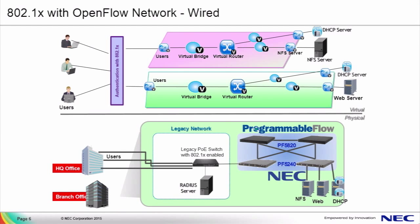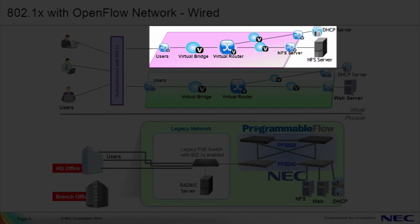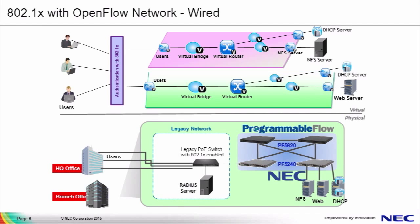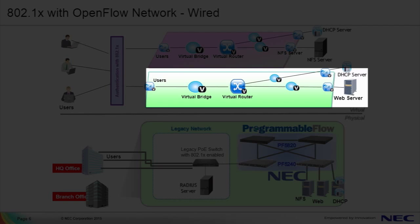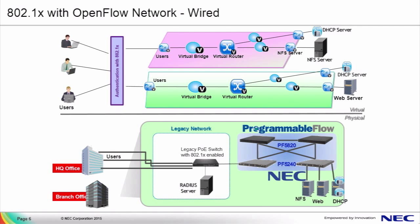Moving up to the virtual diagram, we're showing a series of virtual tenant networks, or VTNs, to illustrate how the physical topology can be sliced into different virtual tenant networks. Users that are correctly authenticated via RADIUS are mapped to the appropriate virtual network. In the case of the pink VTN, as users are authenticated and provided access via the VLAN mapping technique, users are granted access to the NFS server. Below the pink VTN, we have a green virtual tenant network, and as users are mapped via the VLAN mapping technique to that VTN, they're provided access to the web server.